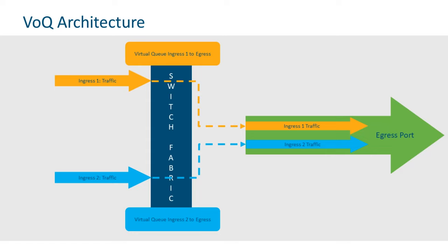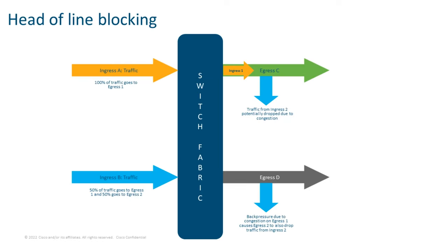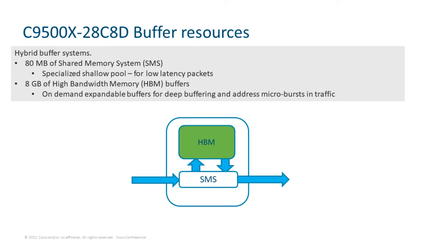In a first for campus switching, the Cisco 9500 X uses a virtual output queue (VOQ) forwarding model. With this model, the switch builds virtual queues between each ingress and egress and forwards traffic based upon a credit system. The virtual queues enable the 9500 X to circumvent head-of-line blocking, a phenomenon typically seen on devices with higher speeds and bandwidths, where back pressure from congestion on one port might cause other ports to start dropping traffic as well.